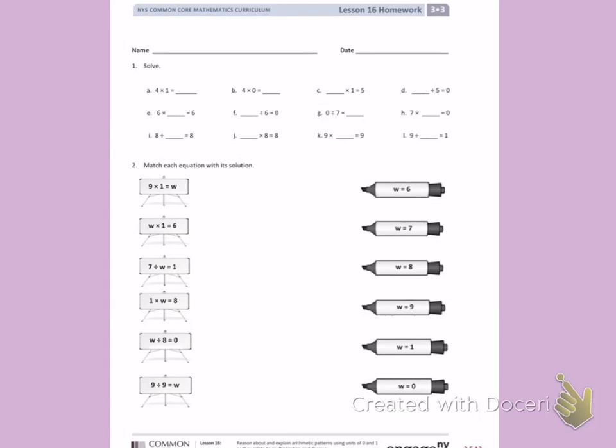This is Module 3, Lesson 16, Homework, Side 1. Today's objective was to reason about and explain arithmetic patterns using units of 0 and 1 as they relate to multiplication and division.